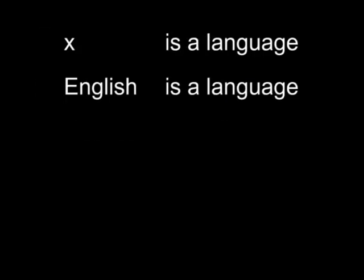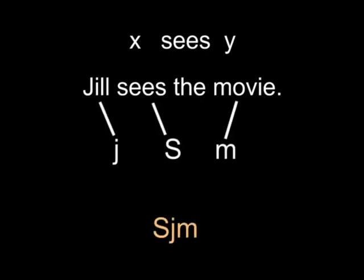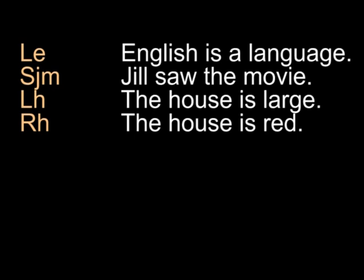Our first two predicates say something about a single subject. For example, we could say that English is a language, and write that in logic. That third predicate has multiple arguments — we could say John sees Mary, or Jill sees the movie, and we'll write the sentence in symbolic logic like this. Notice that the predicate comes first. This is true whether the predicate constant is the predicate of a single individual or of multiple individuals.